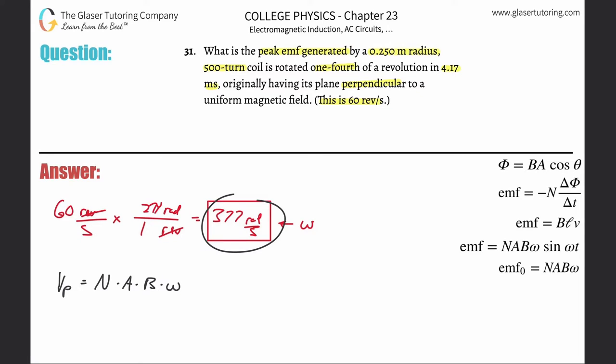The number of turns is 500. For the cross-sectional area, they told us the radius this time, and it's in meters. So we take π times 0.25 squared.